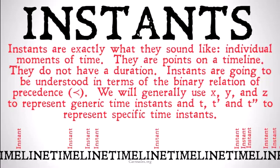Instants are going to be understood in terms of a binary relation — that means a two-part relation that relates two things — called precedence, which we're going to represent with a curvy less-than sign. So if we wanted to say one moment is before another moment, we would write that first moment, then the curvy precedence sign, then the second moment. The smaller side goes to the previous moment and the larger side goes to the latter moment.